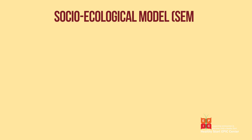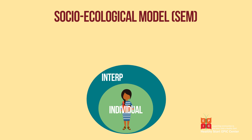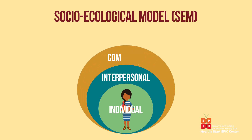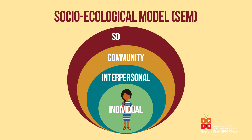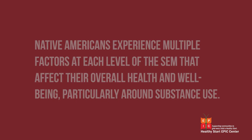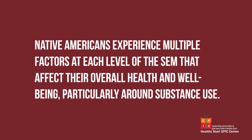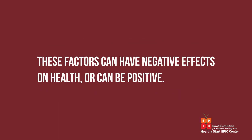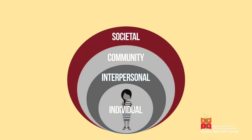The social determinants of health can be explained through the socio-ecological model, or SEM. This framework breaks down how individuals are affected by their societies and policies, communities, and interpersonal relationships like family and friends. Native Americans experience multiple factors at each level of the SEM that affect their overall health and well-being, particularly around substance use. These factors can have negative effects on health, or can be positive, serving as protective factors.